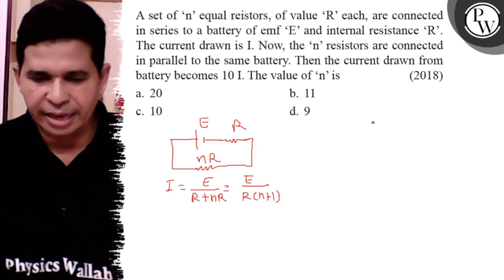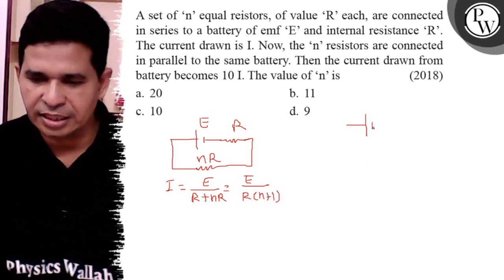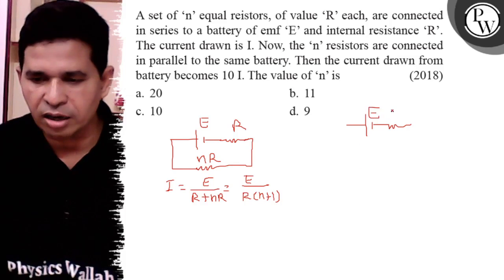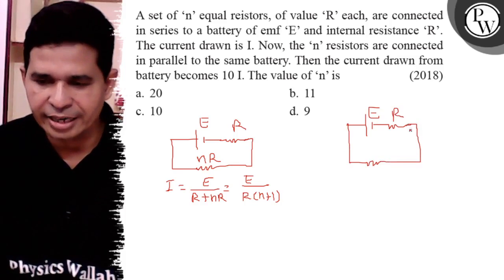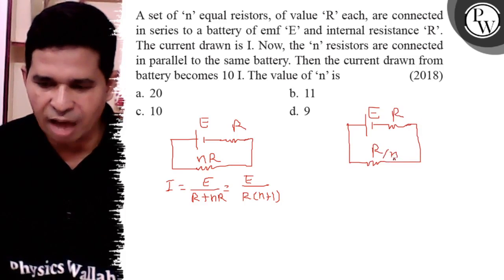Now same story is there. ER and these resistances are connected in parallel, parallel it is R by N.